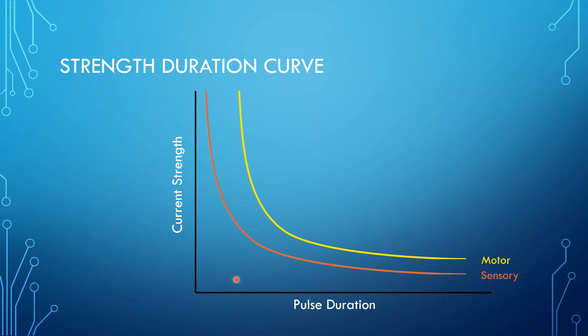One thing that's important to note is that if you want to get only a sensory response and no motor response, which is what you want with conventional or high-frequency TENS, you can set your pulse duration fairly short. If you set your pulse duration fairly short, then when you increase the current strength, you will cross that sensory strength duration curve, the client will feel it, but pretty much no matter how high they turn the current strength up, they're never going to hit the motor curve. That way you are ensuring they'll only have sensory and never motor stimulation.